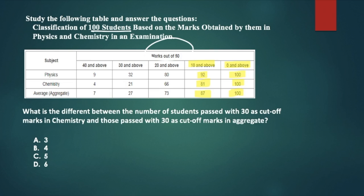The question says, what is the difference between the number of students passed with 30 as cut-off in chemistry versus 30 as cut-off marks in aggregate? 30 as cut-off in chemistry means 21 students, and those passed with 30 as cut-off marks in aggregate means 27. So we have to find the difference between 21 and 27. The difference is 6, so our answer is 6 in this case.